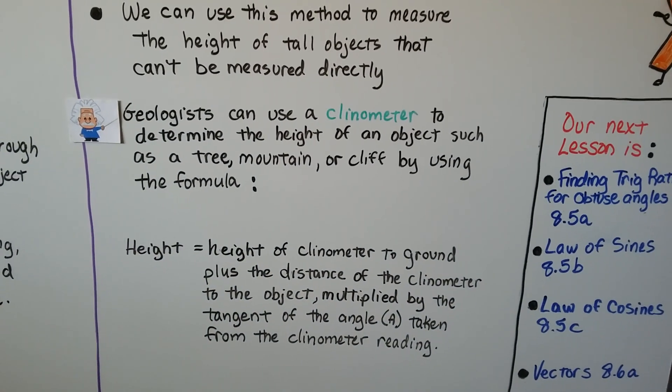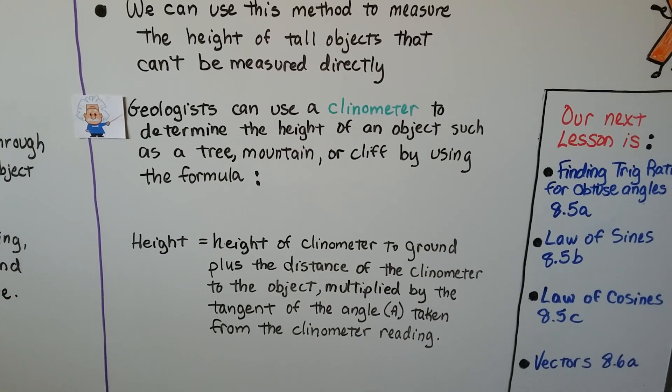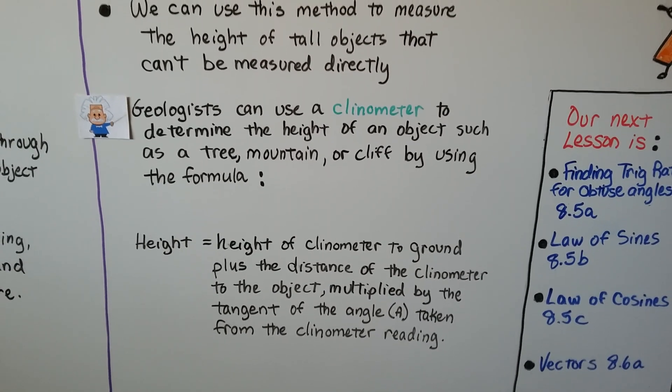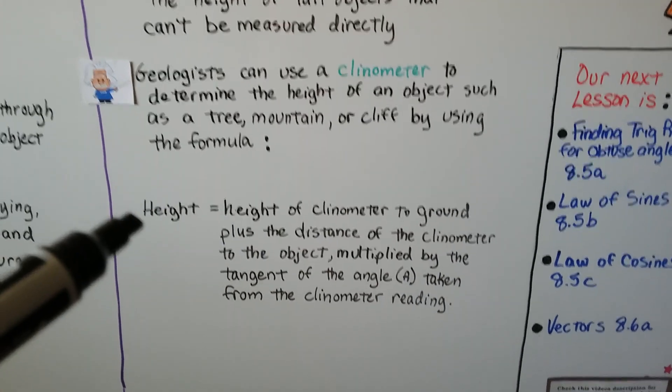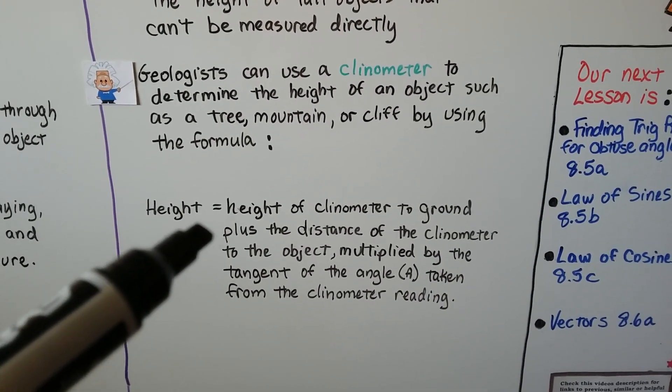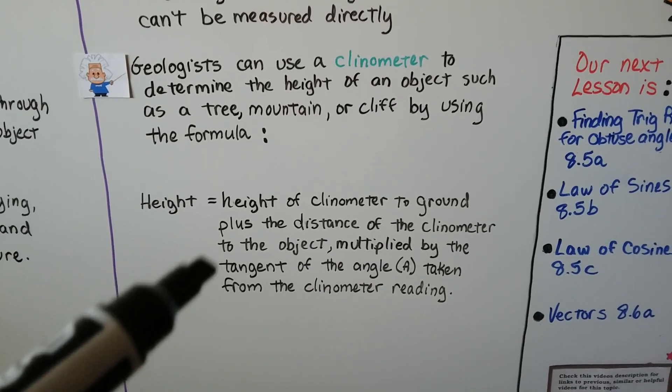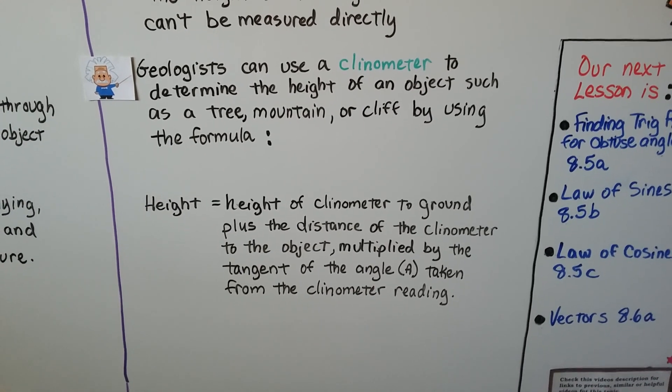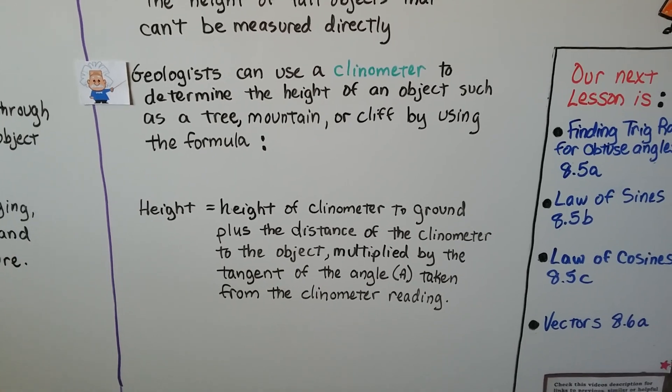And geologists can use a clinometer to determine the height of an object like a tree, a mountain, or a cliff by using the formula. The entire height is equal to the height of the clinometer to the ground plus the distance of the clinometer to the object multiplied by the tangent of the angle taken from the clinometer reading.